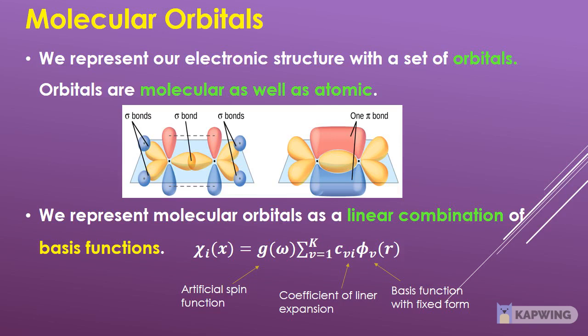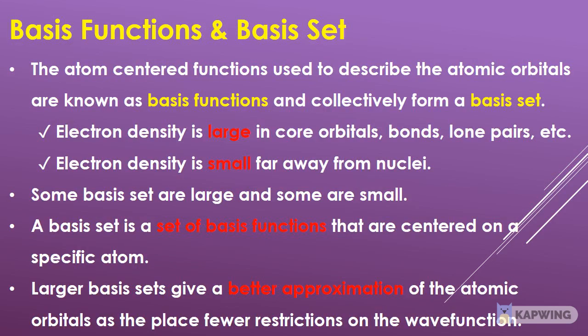We represent our electronic structure with a set of molecular orbitals. Orbitals are molecular as well as atomic. We represent molecular orbitals as a linear combination of basis functions. The atom-centered functions used to describe the atomic orbitals are known as basis functions, and collectively they form a basis set.